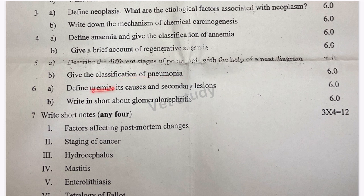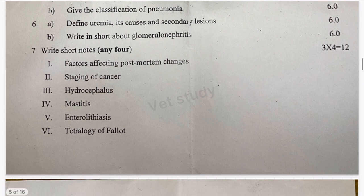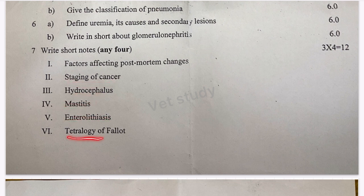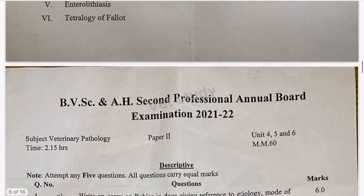Uremia and its causes, glomerulonephritis, post-mortem changes — also an important topic asked many times. Besides, staging of cancer, hydrocephalus, mastitis, enterolithiasis, and tetralogy of Fallot — all these are equally important, but the previously mentioned topics are the most important.